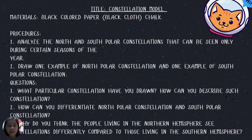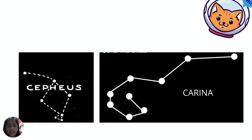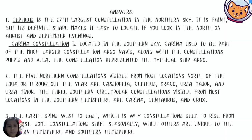Here are the answers. We have Cepheus (north polar) and Carina (south polar). Cepheus is the 27th largest constellation in the northern sky — it is faint but its definite shape makes it easy to locate if you look north on August and September evenings. Carina constellation is located in the southern sky and used to be part of the larger constellation Argo Navis, along with Puppis and Vela, which represented the mythical ship Argo.